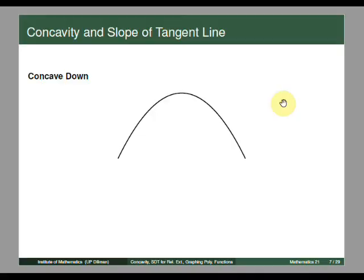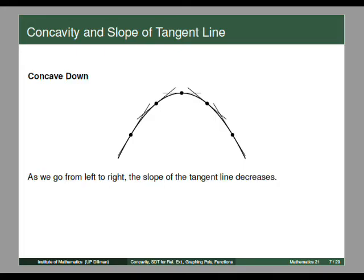For concave down, the function should look like this. Checking the tangent lines from left to right: positive slope, positive slope, zero slope, negative slope, negative slope. Hence, from left to right, the slope of the tangent line decreases. This translates to the fact that f double prime of x is less than 0. So we can conclude that whenever a function is concave down, the derivative of the slope is negative, and therefore f double prime is negative.